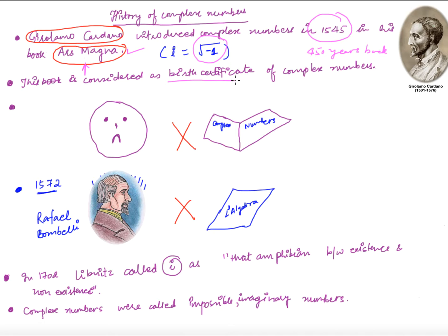Soon after introducing the square root of negative numbers, Cardano realized these were actually weird. He felt he was doing something totally wrong and useless, so he discarded whatever he had discovered. After that, for about 30 years, nobody bothered with these numbers.